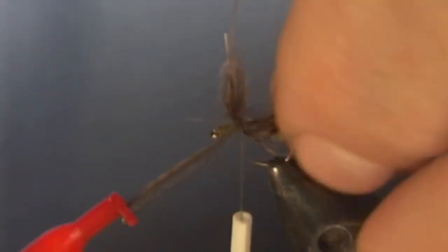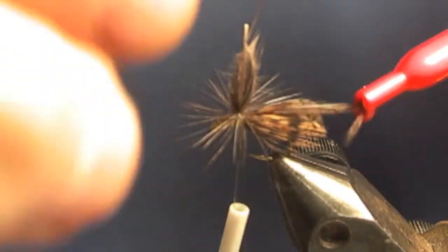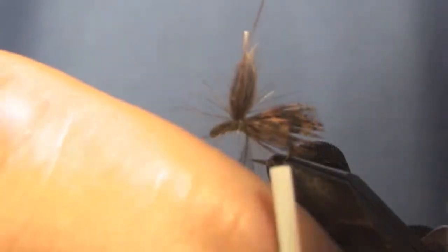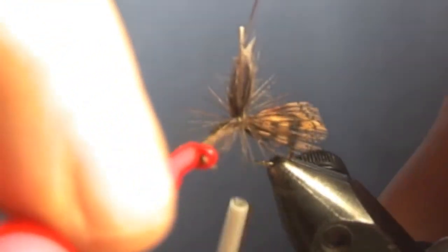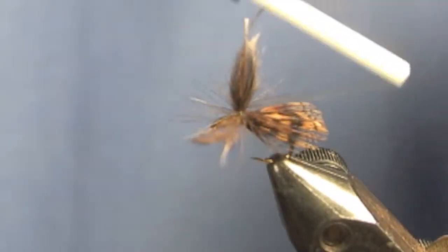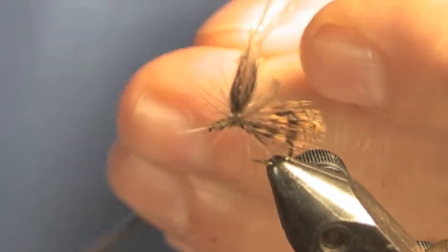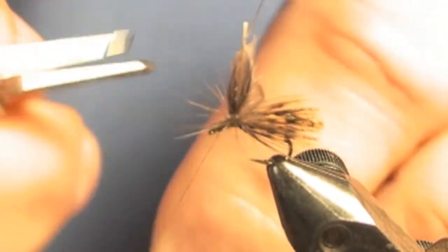You'll notice that the hackle for this, when you're sizing hackle for parachutes, especially for something like this that you want riding nice and low, go a little bit bigger than you would for the same size standard dry fly. Go around one more time, and that's it. Now we just pull everything back, bring the thread up, and whip finish at the eye.